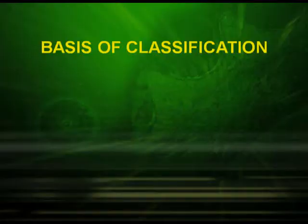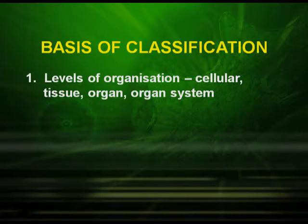Now, what is the basis of classification? There are certain criteria. The first is levels of organization. Some of the organisms show cellular level of organization, for example in Porifera. Some show tissue level of organization. Few other animals show organ level of organization, and the highest evolved form shows organ system level of organization.